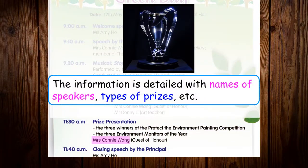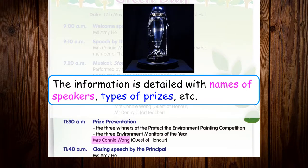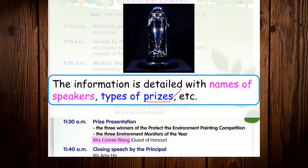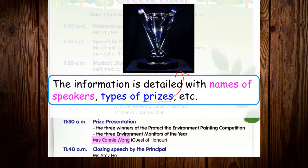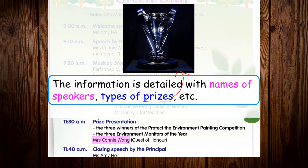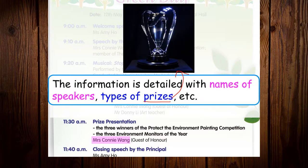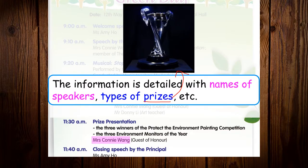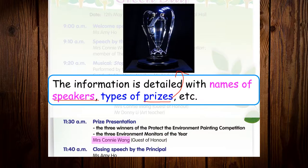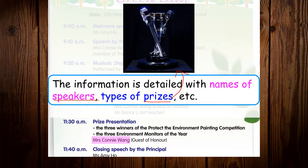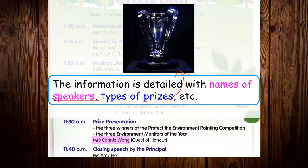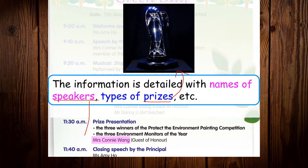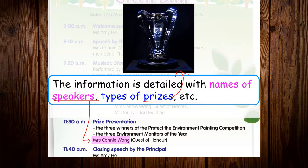Some information is detailed with names of speakers, types of prizes, etc. Prizes means awards. So for prize presentation, you can see the three winners of the Protect the Environment Painting Competition, and the three environment monitors of the year. The name listed under the event means who will do the speaking, talking, and who will give out the prizes.